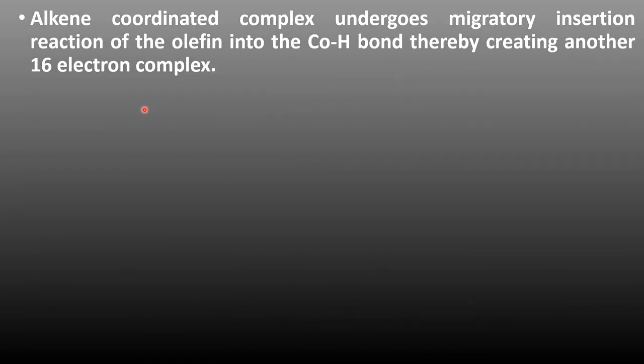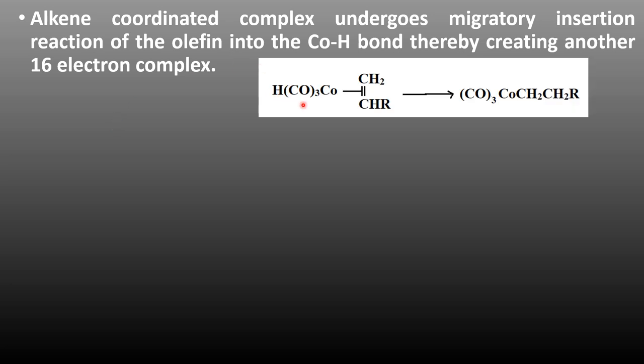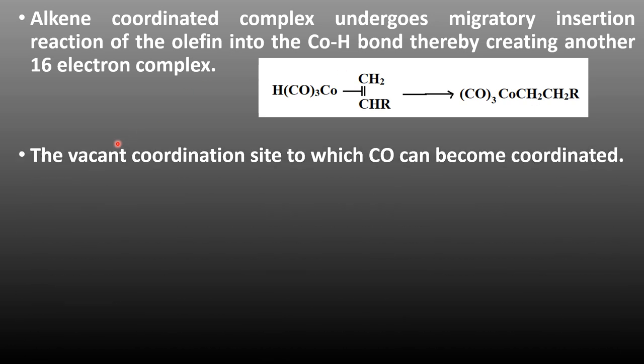The alkene coordinated complex undergoes a migratory insertion reaction of the olefin into the Co-H bond, thereby creating another 16 electron complex. The alkene undergoes a migratory insertion reaction in between the cobalt and hydrogen bond, forming Co(CO)3CH2CH2R. A vacant coordination site is formed here, creating a 16 electron complex.